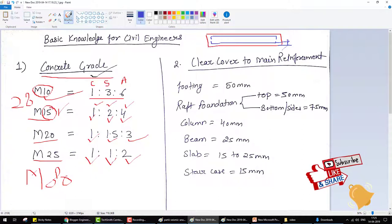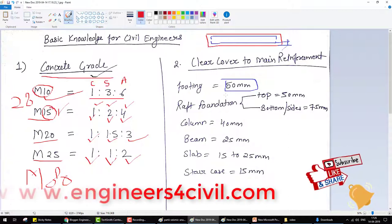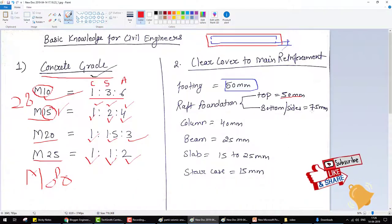The clear cover for footing is at least 50mm. The clear cover for raft foundation top is 50mm and bottom inside is 75mm. Like this: if this is the raft foundation and this is the reinforcement.